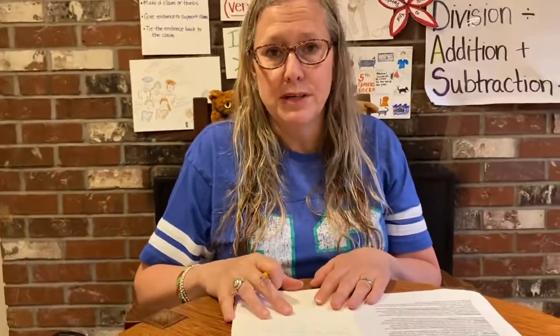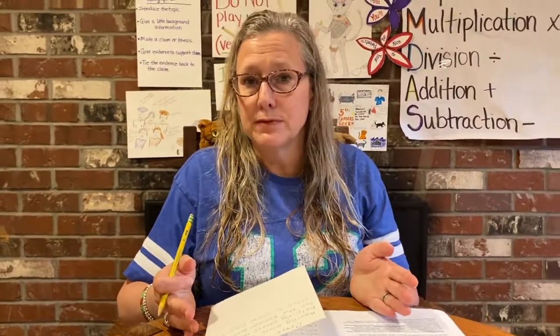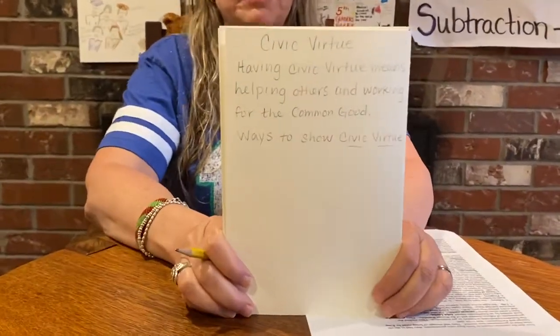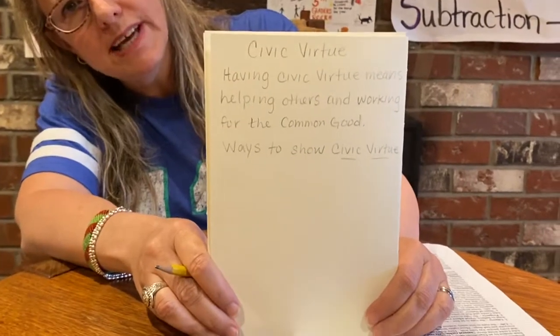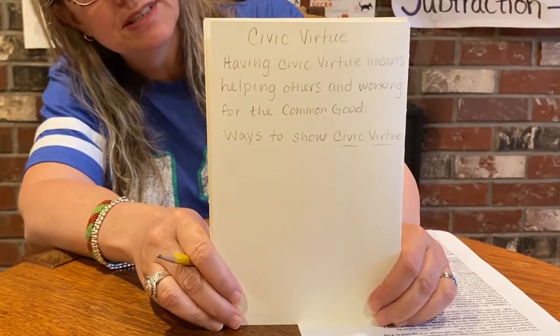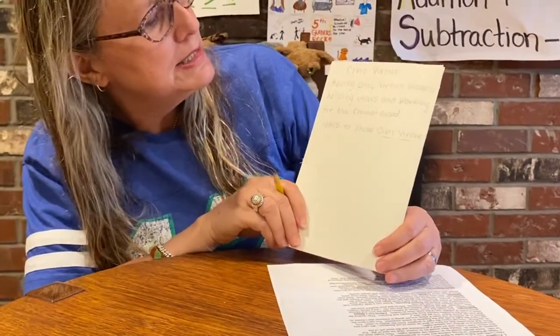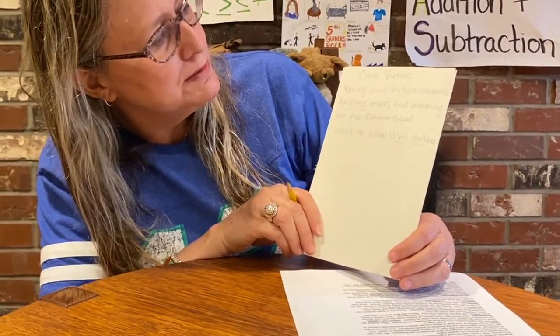Today we are working on the back page of our book and this one is about civic virtue. Civic virtue means helping others and working for the common good. We want our representatives to have civic virtue, but really we want everybody to have civic virtue — it means that we look out for each other, we take care of each other, we take care of our community. Let's start off by giving that title and definition: Civic virtue — having civic virtue means helping others and working for the common good.